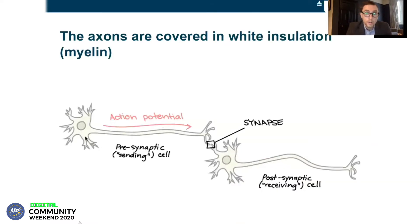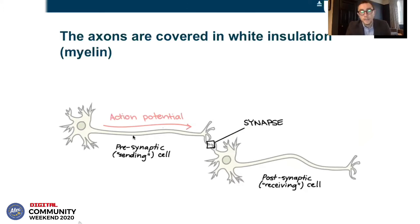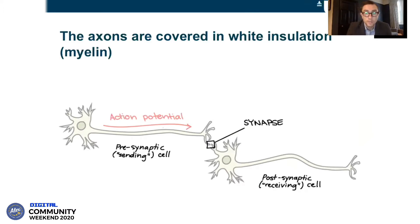In the brain, we have neurons and the neurons have a cell body. The neurons communicate with each other by sending messages down the axons to touch off other neurons and activate them. These axons constitute the white matter. They're white because the axons are covered in insulation, which is myelin. Myelin is a sort of fatty substance which has a white appearance, and that's why it's white matter. So the white matter refers to all of the axons of the neurons, which is how the neurons in the brain communicate with each other.